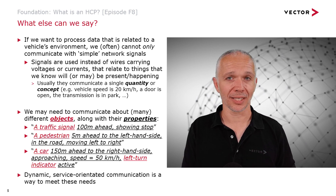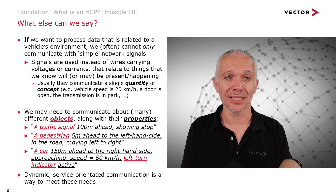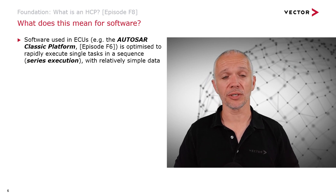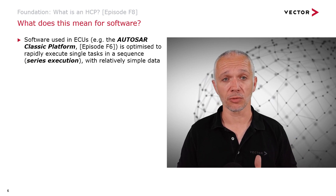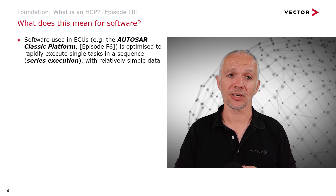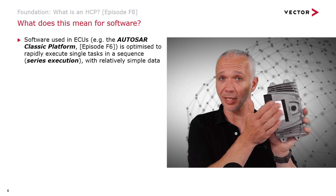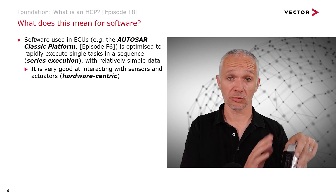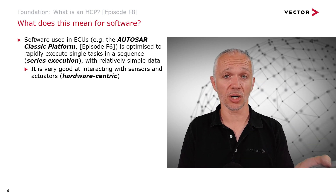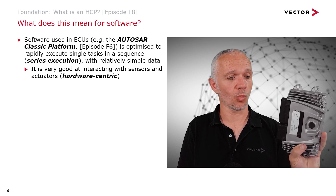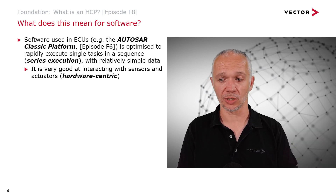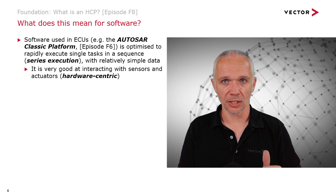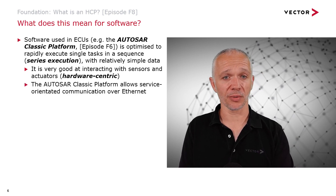Dynamic service-oriented communication is a way to meet the needs of the communications we want to have. If we think about what this means for the software: the software used in ECUs, such as the AUTOSAR Classic Platform we talked about in episode F6, is optimized to rapidly execute single tasks in a sequence with relatively simple data. It's really good at interacting with sensors and actuators — around 70 IOs. So we can think of our ECUs as hardware-centric: they give software a way to interact with the hardware of our vehicle — switches, sensors, and outputs like motors and lights.